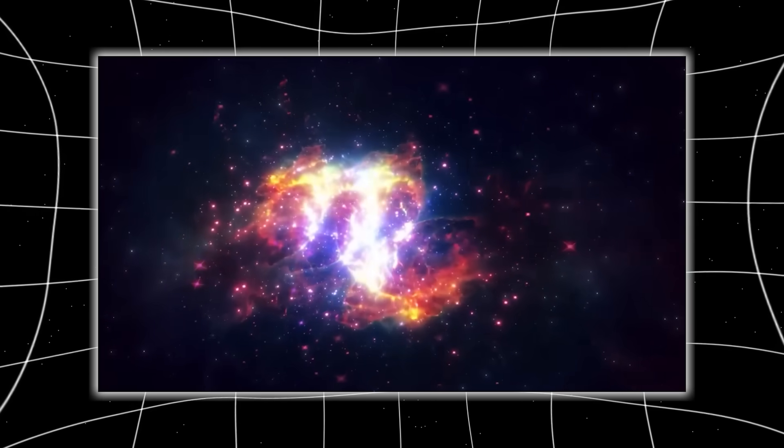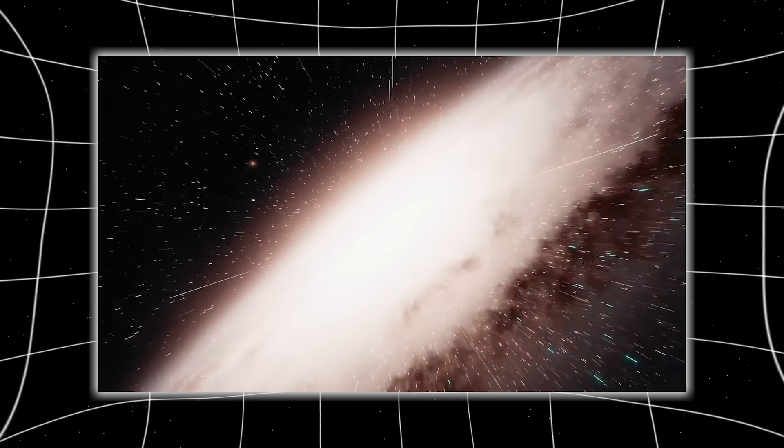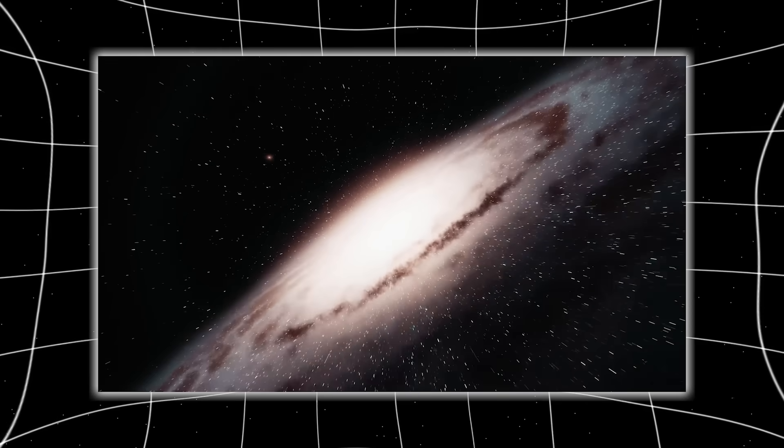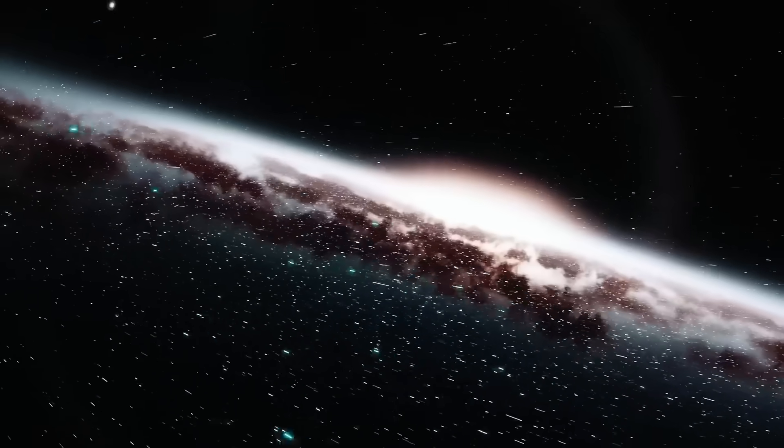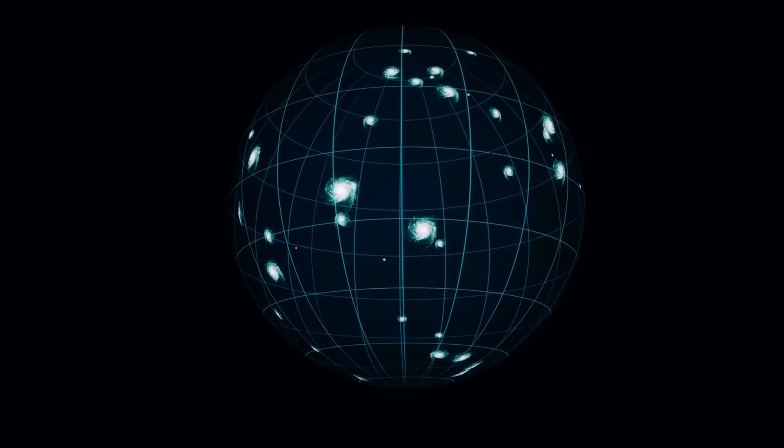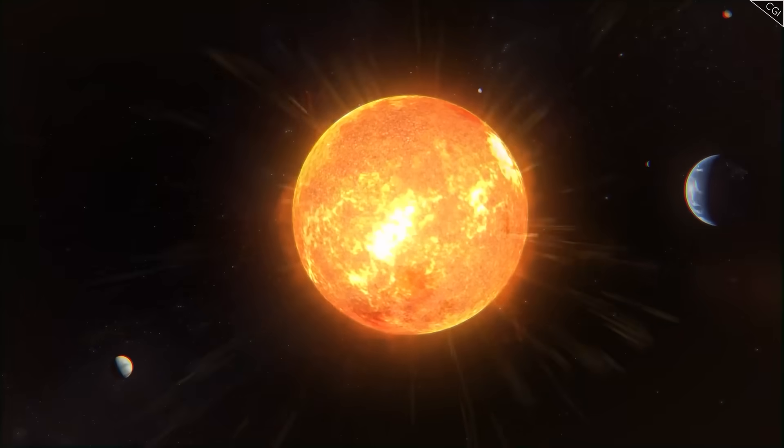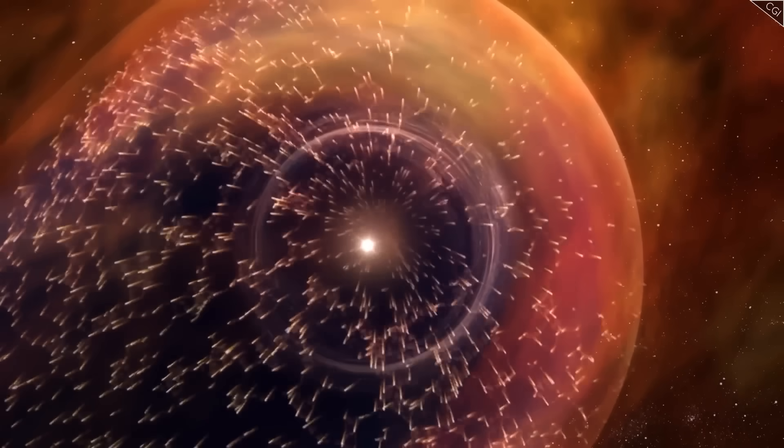What disturbed scientists most wasn't just the density. It was the temperature. This plasma was hot, not star-hot. Artificially hot. The type of heat generated not by natural phenomena, but by containment, by control, by design. As if something had created a barrier. A membrane separating our solar system from what lies beyond, not to keep things out, but to keep us in.